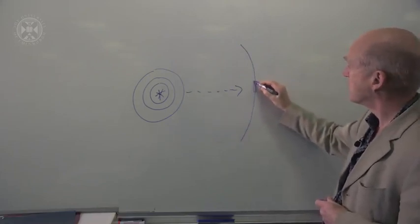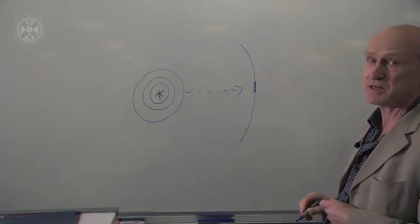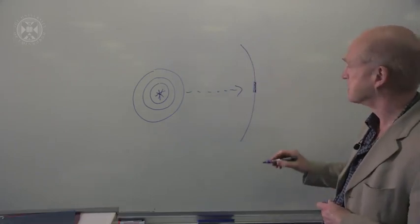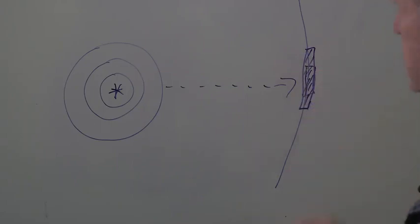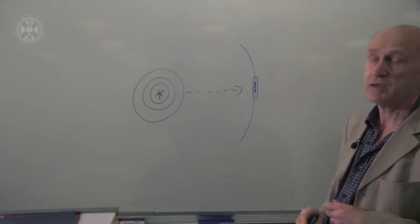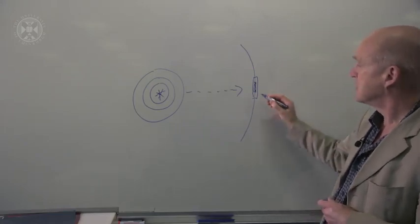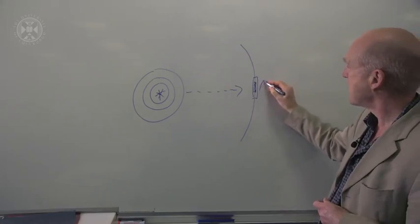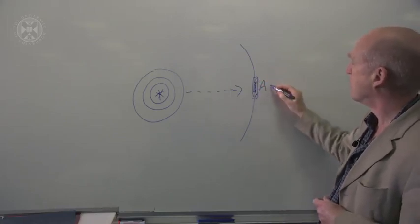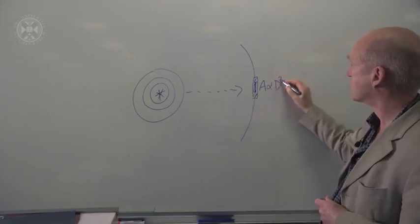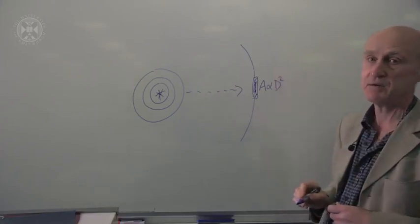Here is the mirror of our telescope catching the light. If you have a bigger mirror, you catch a larger fraction of the light coming from that star. So the amount of light we get is proportional to the area of our mirror, which is likewise proportional to the square of the diameter of the mirror.